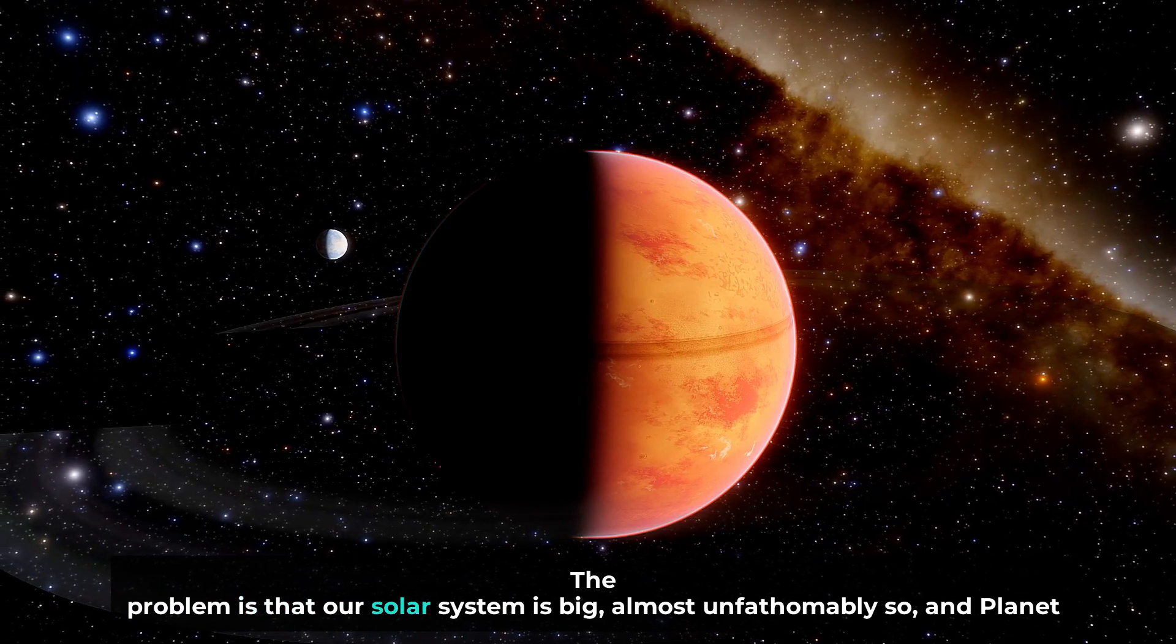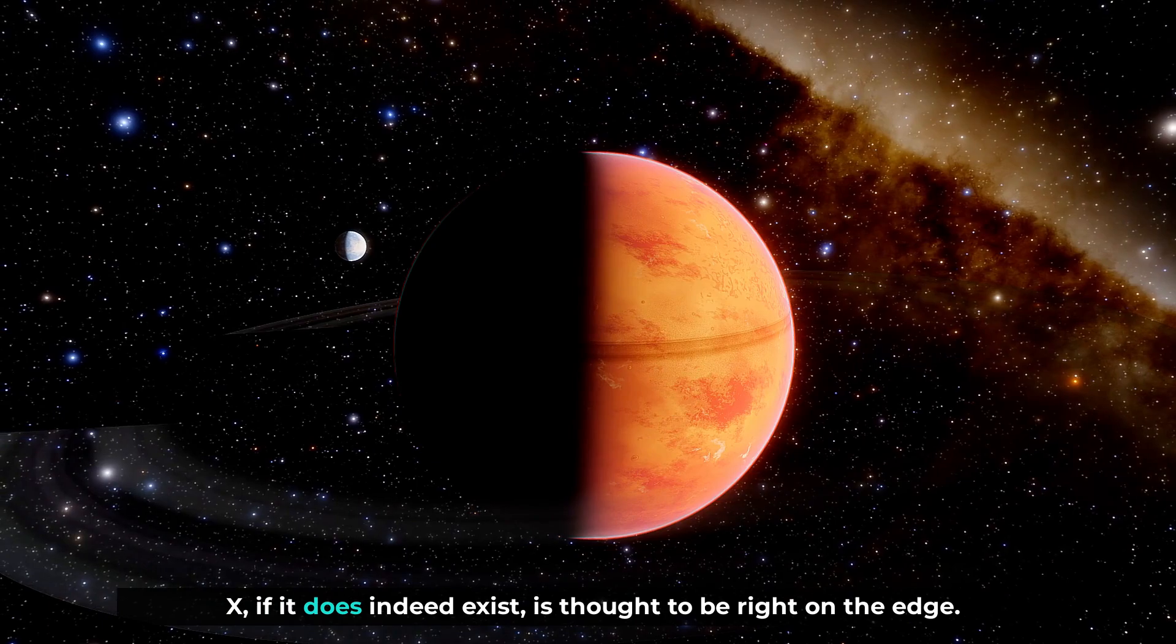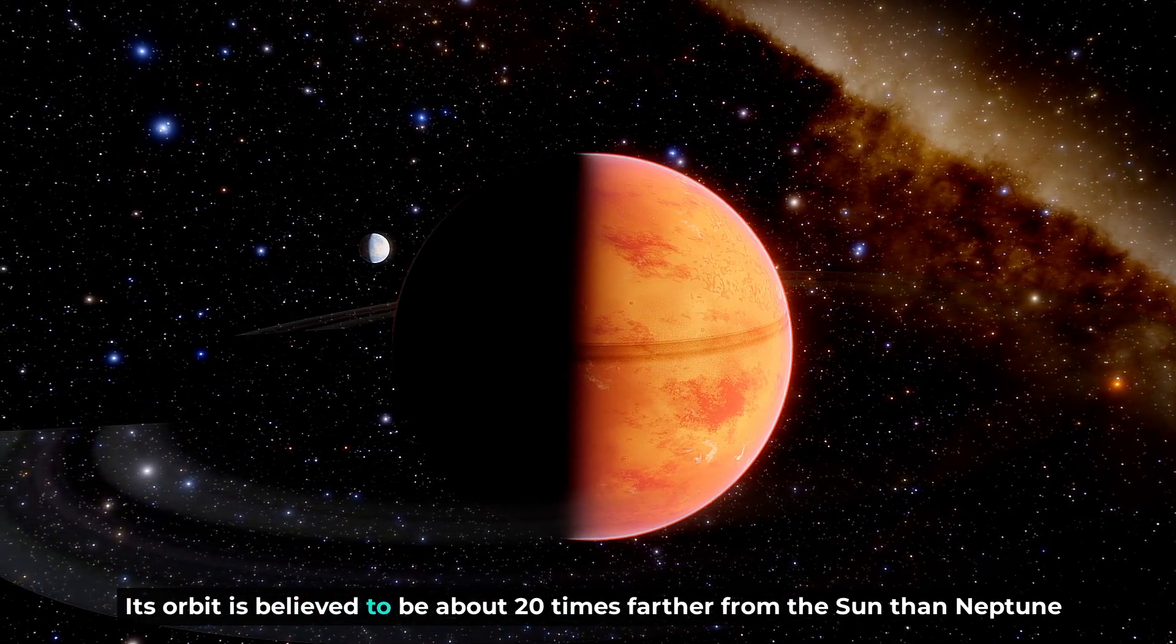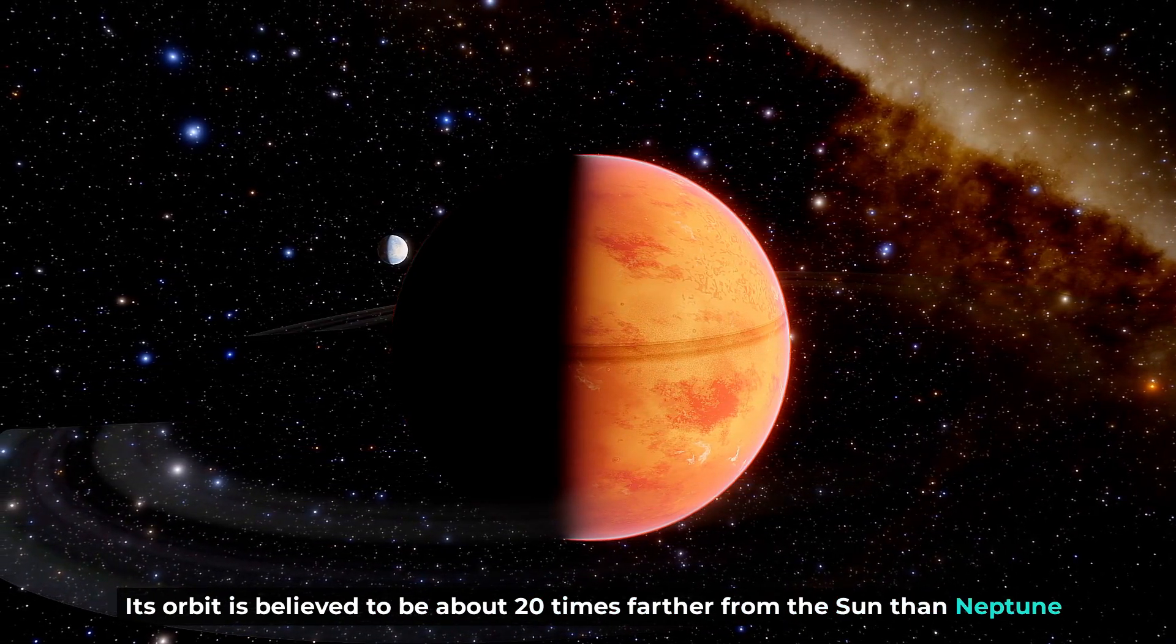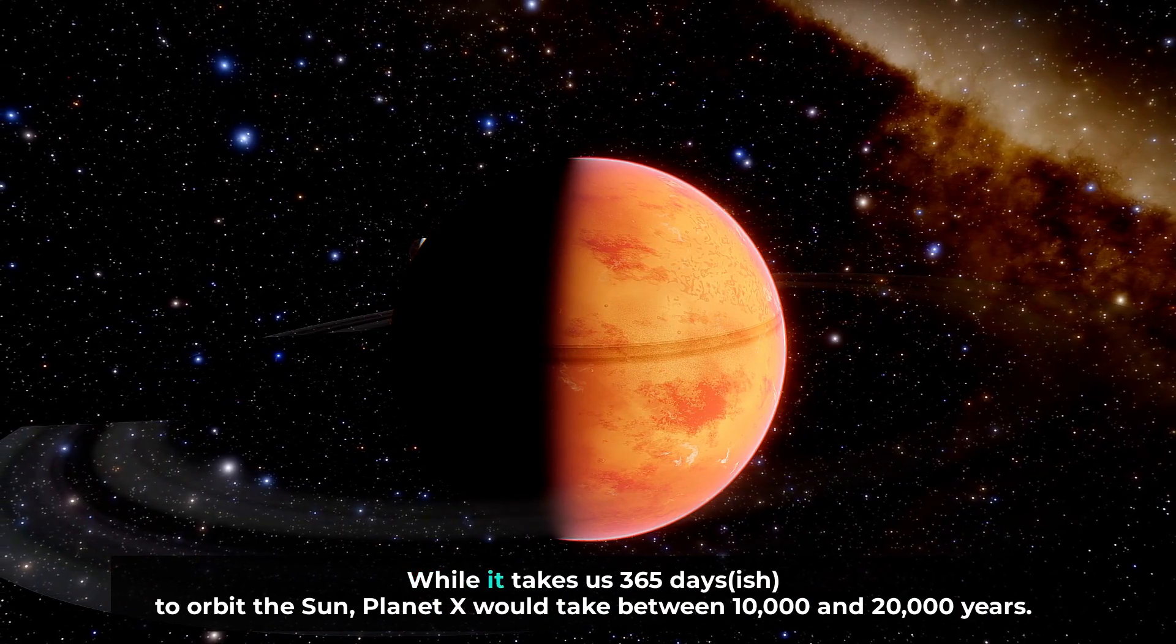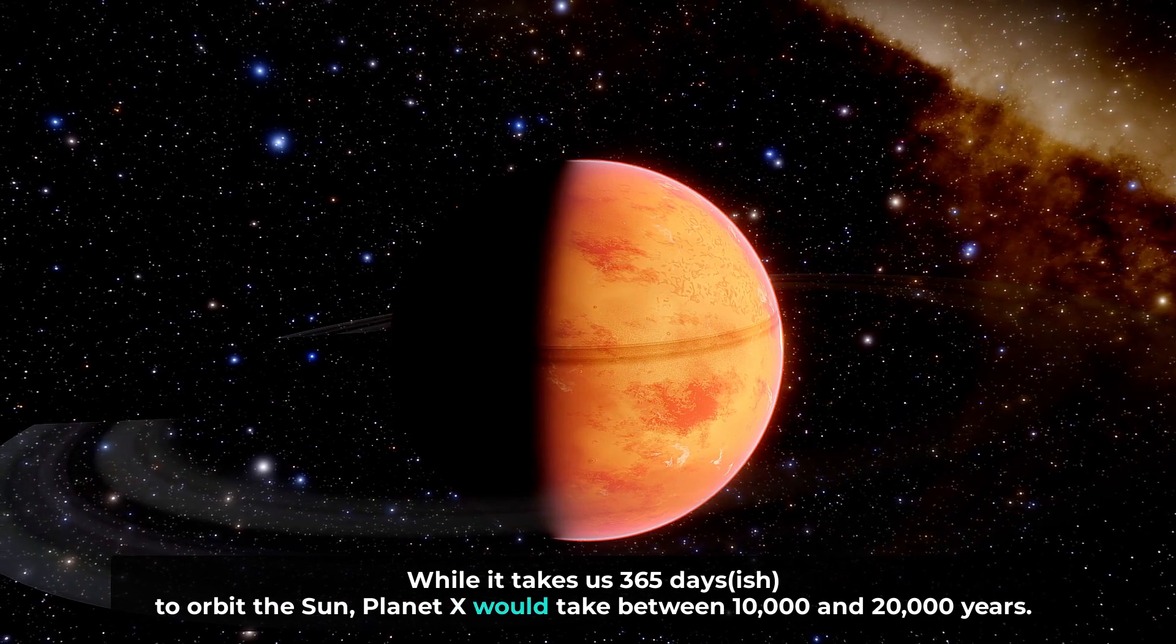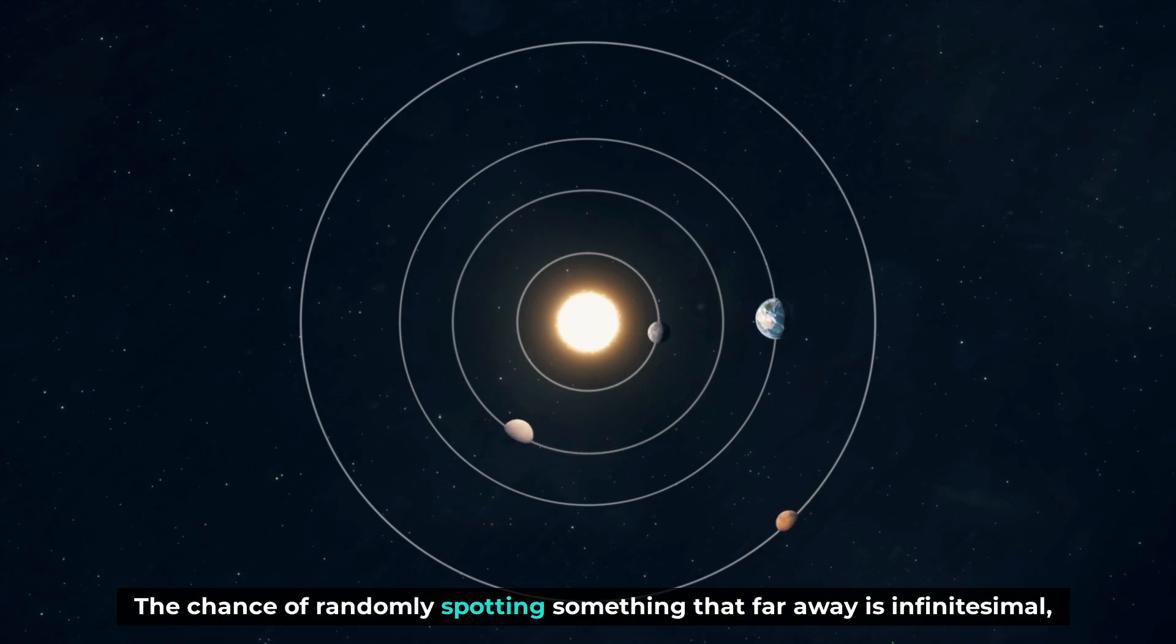The problem is that our solar system is big, almost unfathomably so, and Planet X, if it does indeed exist, is thought to be right on the edge. Its orbit is believed to be about 20 times farther from the sun than Neptune, which orbits the sun at a distance of 2.8 billion miles or 4.5 billion kilometers. While it takes us 365 days to orbit the sun, Planet X would take between 10,000 and 20,000 years.